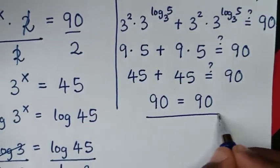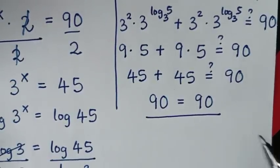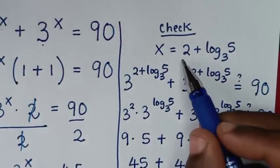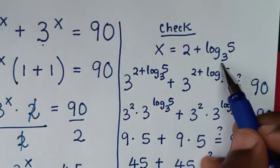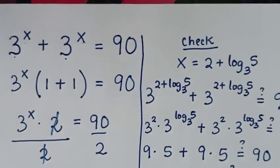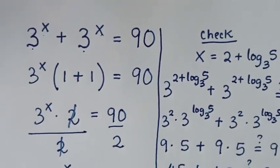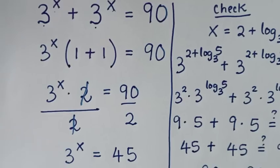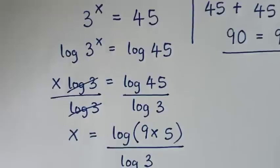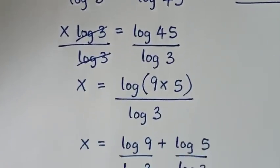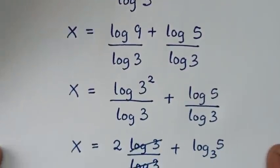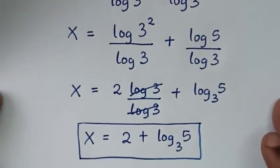Left side and right side are equal, so it is true for the value of x, which is 2 plus log of 5 base 3. Thank you for watching. Don't forget to subscribe to my channel, and see you in the next video. Bye-bye.